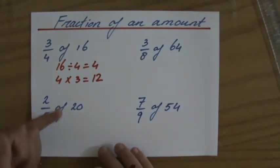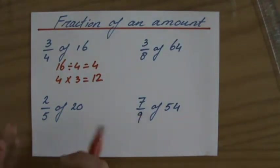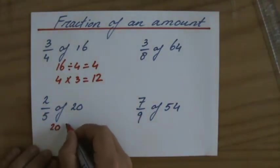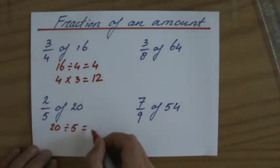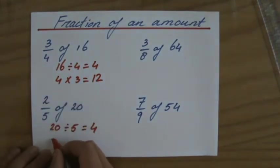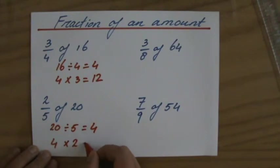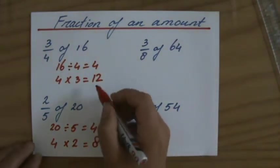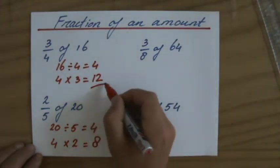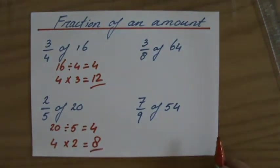Now the next one, 2/5 of 20. So I divide 20 to 5 equal parts. I divide it to 5 equal parts. Each part is 4. And I grab 2 of those parts. So I have 8. Let me put a little line underneath your final answer.